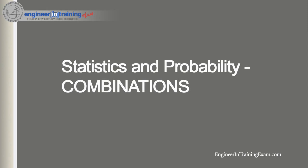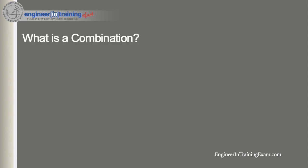If you need a refresher on permutations, you can jump over to that tutorial once this one is complete. This one will be completely standalone so you can continue to watch and follow along. Let's first start off by defining a combination. An arrangement of R objects without regard to order and without repetition selected from N distinct objects is called a combination. A combination of N objects taken R at a time is equal to N factorial divided by N minus R factorial times R factorial.